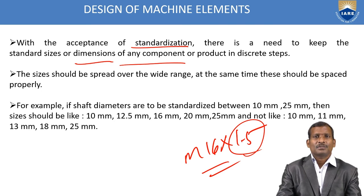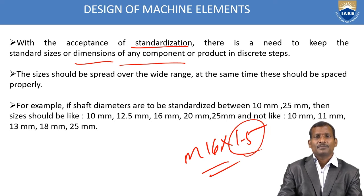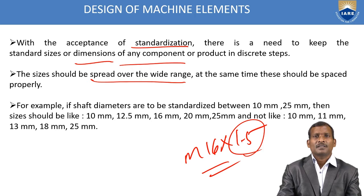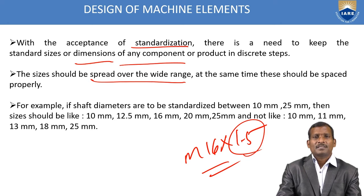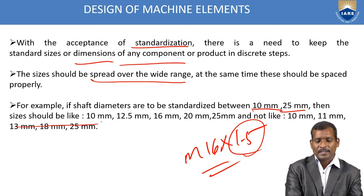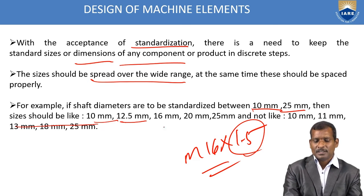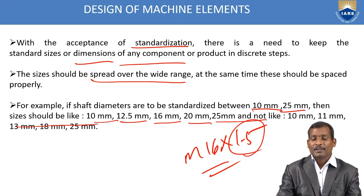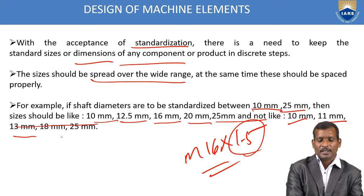The sizes should be spread over a wide range and at the same time should be spaced properly, not in a closed manner. For example, if shaft diameters are to be standardized between 10 mm and 25 mm, then sizes should be like 10 mm, 12.5 mm, 16 mm, 20 mm, 25 mm — and not like 10, 11, 13, 18, and 25 mm.